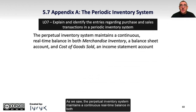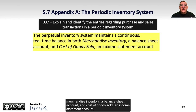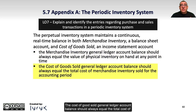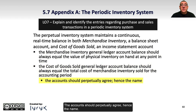As we saw, the perpetual inventory system maintains a continuous real-time balance in both merchandise inventory, a balance sheet account, and cost of goods sold, an income statement account. The merchandise inventory general ledger account balance should always equal the value of the physical inventory on hand at any point in time, and the cost of goods sold general ledger account balance should always equal the total cost of merchandise inventory sold for the accounting period. The accounts should perpetually agree, hence the name.